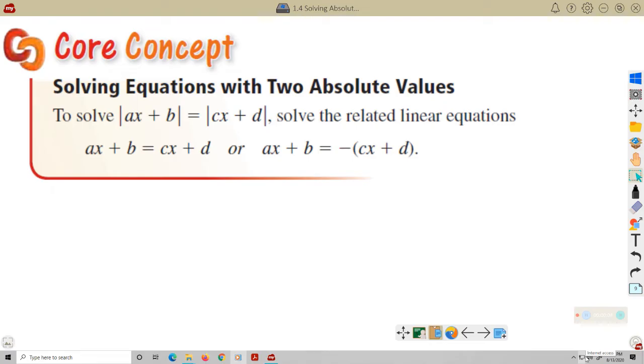Our next idea is solving equations with two absolute values. As you can see in the examples here, we have one absolute value equal to another absolute value. To do this, we're going to do similar to what we did if the absolute value was just a positive value. We're going to have a positive case and a negative case.